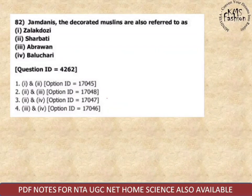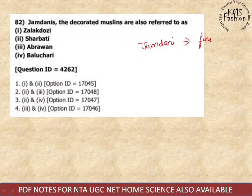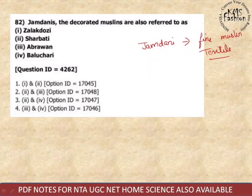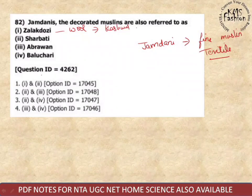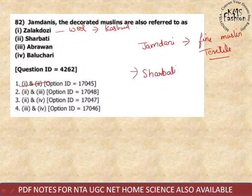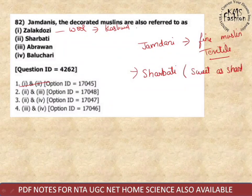Next: Jamdanis — the decorated muslins — are also referred to as what? Jamdani is a fine muslin textile. Zardozi is made of wool and is from Kashmir, so eliminate that. Now, among the varieties of Jamdani: Sharbati means 'sweet as sherbat' and is a part of Jamdani.